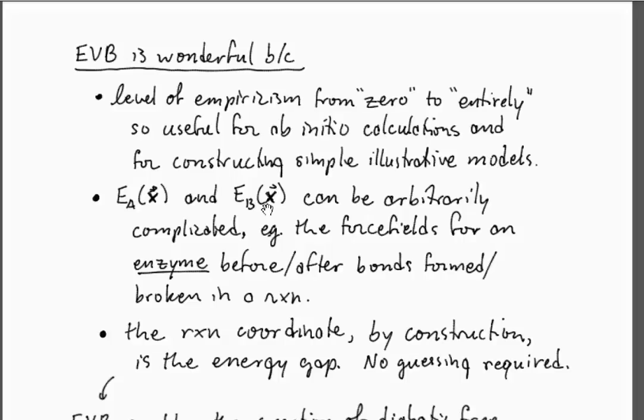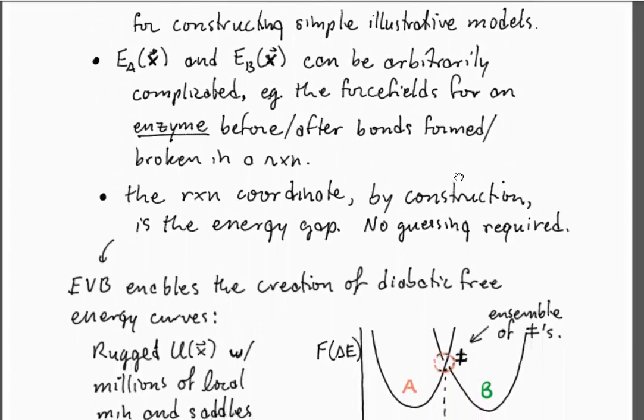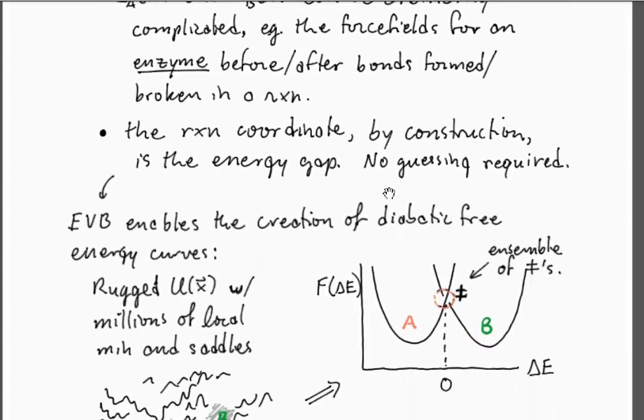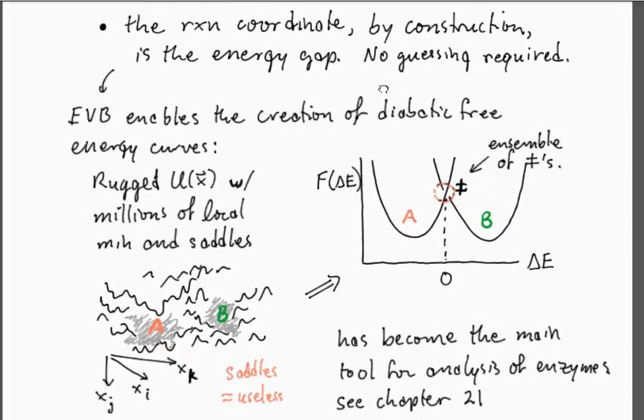This is basically just saying that the energy gap provides a very natural reaction coordinate and you don't really have to go in and guess various degrees of freedom. It's not necessarily one that gives you a lot of intuition about the nature of the mechanism, but it is one that's very useful for computation.